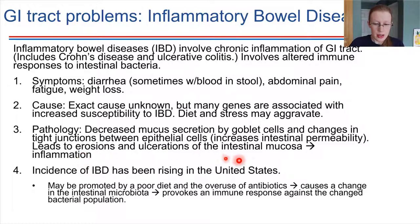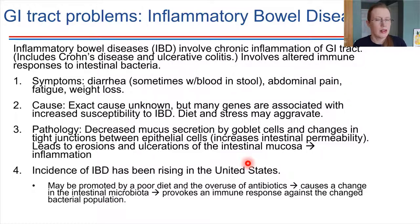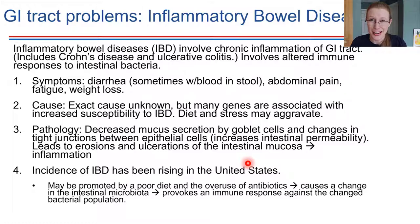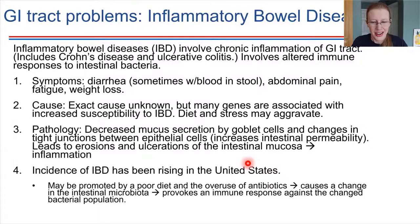Inflammatory bowel disease is not uncommon — it's actually been on the rise in the US. It's thought that this may be due to the American diet. In general, Americans tend to have low fiber, high fat, and high sugar diets, and we want just the opposite: high fiber, low fat, and low sugar in order to facilitate the health of the GI tract.